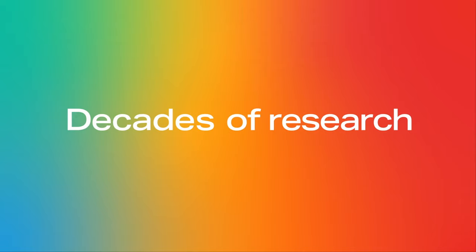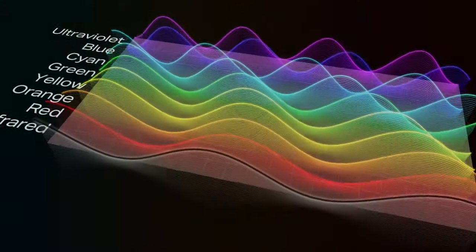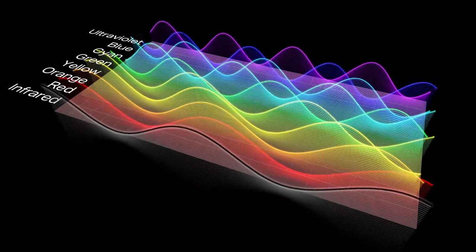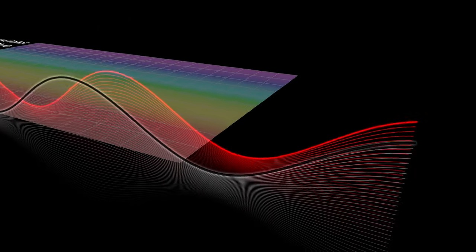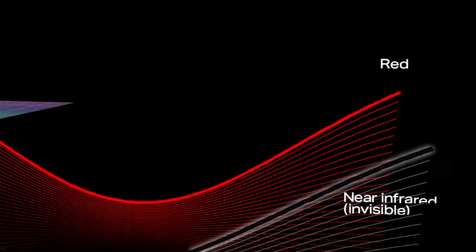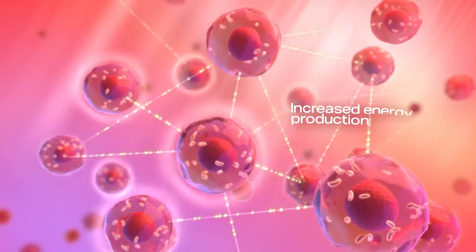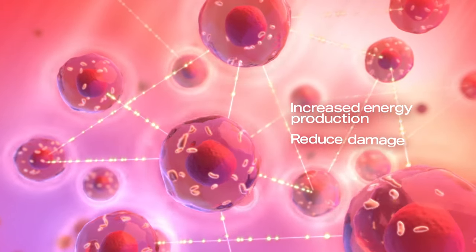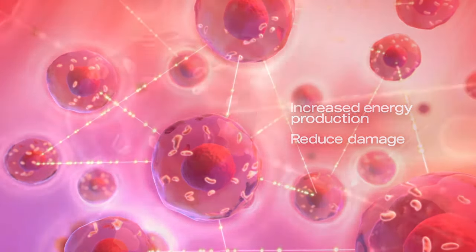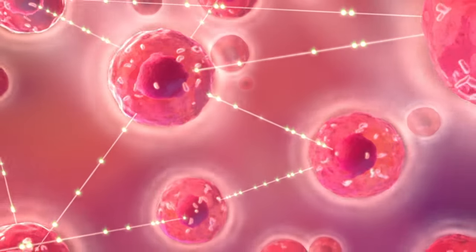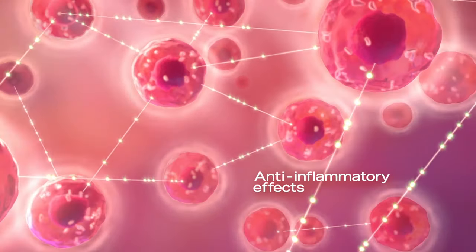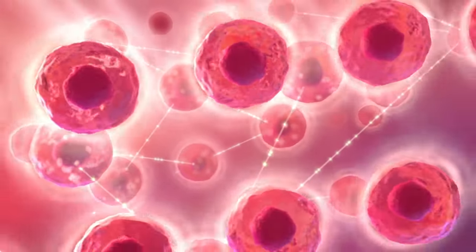Decades of research across thousands of peer-reviewed articles overwhelmingly indicate that specific wavelengths of light have a positive effect on the human body. Red and near-infrared light have been shown to increase the body's ability to produce energy and reduce damage caused by oxidative stress. These forms of light have also been shown to have anti-inflammatory effects, which can improve how we live and feel.